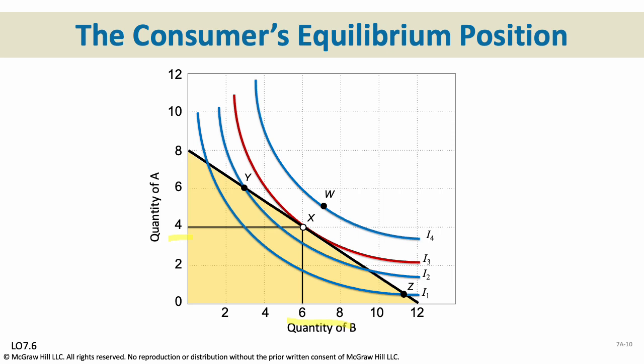Point W represents a higher utility, but the problem is it's not within the bounds of the budget — the consumer's budget is the black line, so curve 4 with point W is beyond the means of this consumer. Curves 2 and 1 are within the means of this consumer, but they are not the maximum amount — combinations on curves 1 and 2 can be purchased, but the utility is lower.